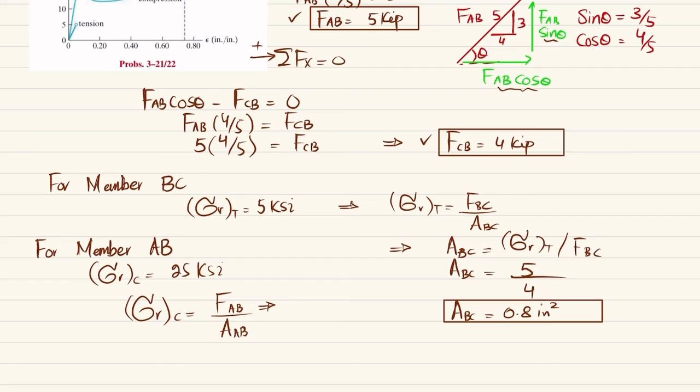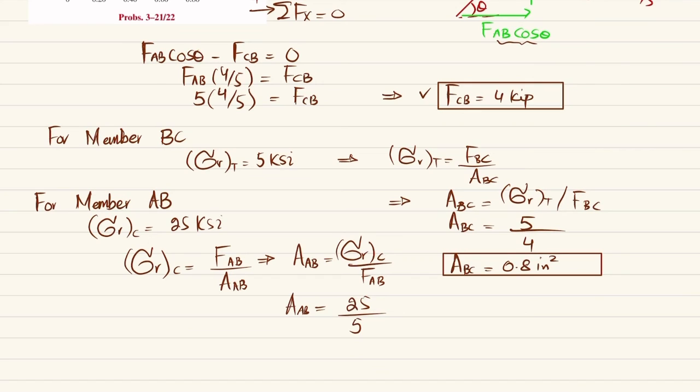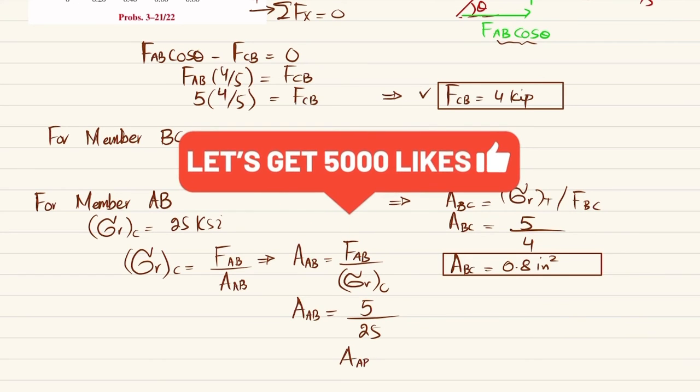So from here area of AB will be equal to FAB divided by sigma rupture compression. So here you have to correct it. This area of AB will be equal to FAB divided by sigma RC. So FAB is 5 divided by 25 will be area of AB. And when you calculate it, this area of AB will come out to be 0.2 square inches.